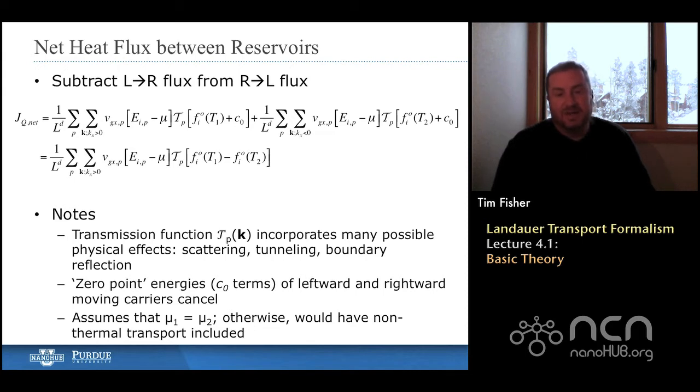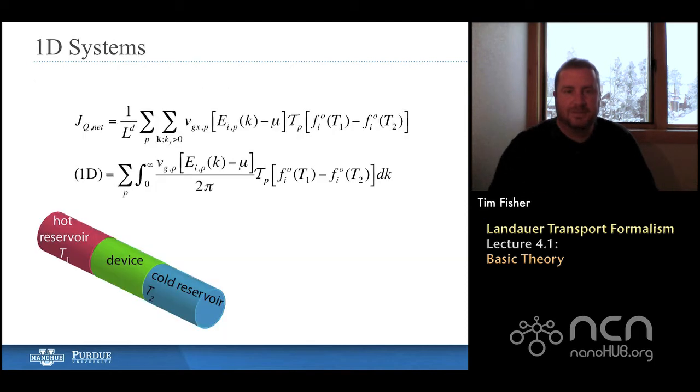This transmission function, I think it's important to note, it actually can incorporate a lot of different physical effects, and we haven't yet touched on them yet. All we've done is some very simple scattering at the end of last week. But things like tunneling could be involved here, boundary reflection, and so forth. So we'll get to that in the following week. We also have assumed here, and this is very important as well, that the chemical potentials of the two reservoirs, of the two contacts, are the same. If that weren't true, then we would have some extra terms that were non-thermal to account for some energy flows that were non-thermal. And in this course, for our purposes, we're going to focus just on thermal transport.